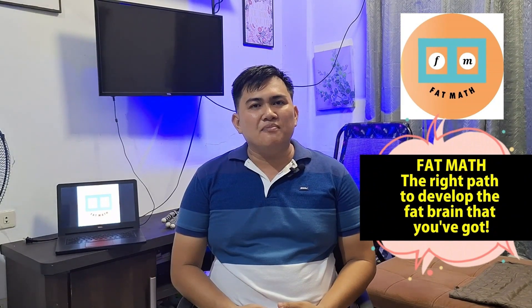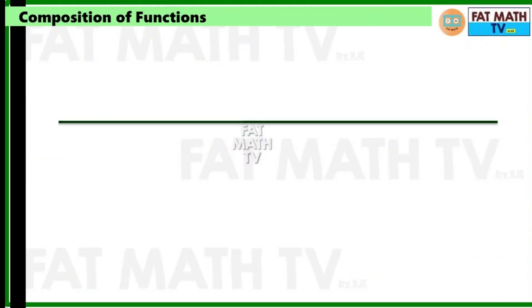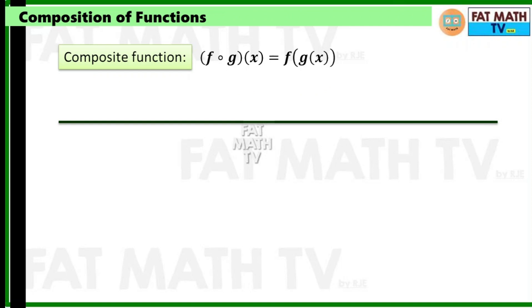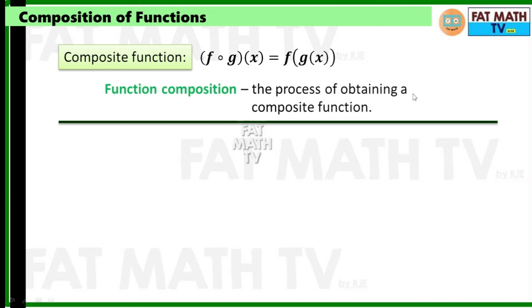Hello everyone and welcome to Fat Math TV. In this video we will cover the composition of functions. The composite function is denoted by f∘g(x), which is defined to be f of g of x. This means we take a certain operation g and make that the input of our function f. The process of obtaining a composite function is called function composition.